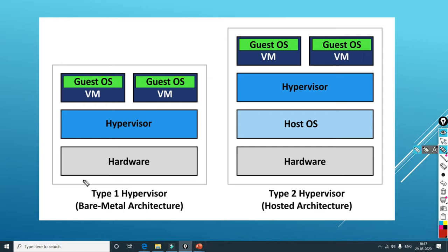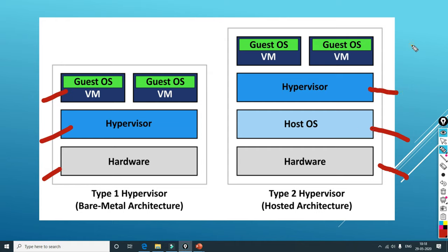For Type 1, you have a hardware layer, you have a hypervisor layer, and you have a guest virtual machine layer. For Type 2, you have a hardware layer, you have a host operating system layer, and on top of it you have a hypervisor layer, and then your virtual machine layer. With Type 1, when you're installing a virtual machine, it is sitting directly on the hypervisor layer, and the hypervisor is directly communicating with the hardware.